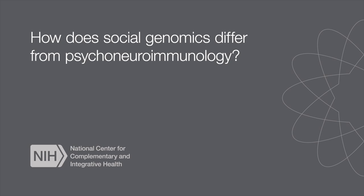How does social genomics differ from psychoneuroimmunology? The work I do in social genomics really grew out of psychoneuroimmunology — these studies of how social and psychological processes influenced immune function. As we came to understand immune function more in terms of genes and the expression and activity of genes, it became natural to ask how social and psychological factors influenced our genome as a whole, not just the genes that are involved in immune response.